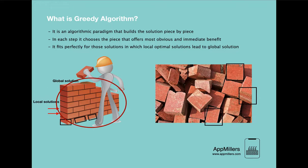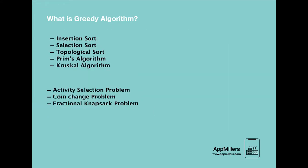Now let's see what problems can be solved using greedy algorithms. The first five algorithms we've already learned — insertion sort, selection sort, topological sort, Prim's algorithm, Kruskal's algorithm, and Dijkstra's algorithm — are all solved using a greedy approach. In the next lecture I will show how the greedy approach works for these. Additionally, we will learn new problems: the activity selection problem, the coin change problem, and the fractional knapsack problem.